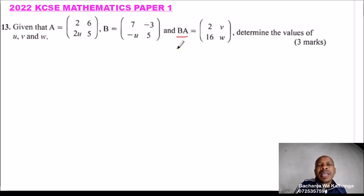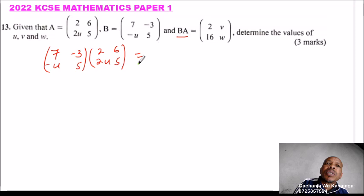So because we are being given the product of A and B, we arrange our matrices like this: 7, -3, and we have minus U, 5. So that is B, and A is 2, 6, 2U, 5. It equals, now this is A, this is B, and this is our BA which is 2V, 16W.